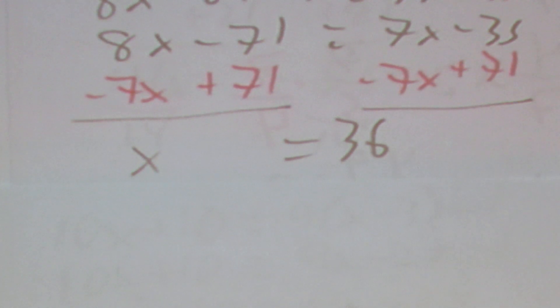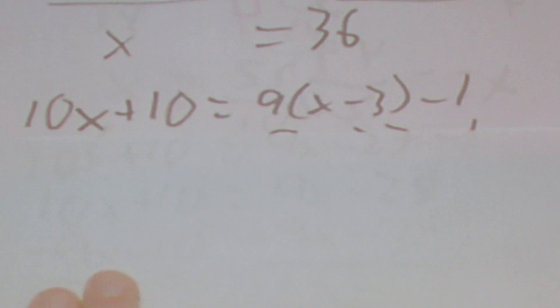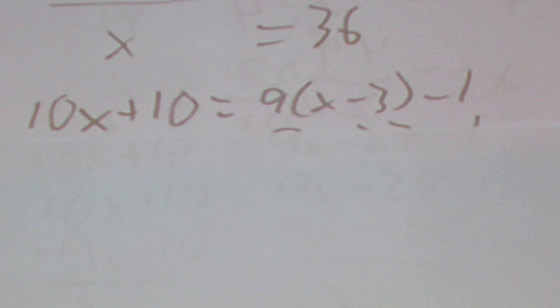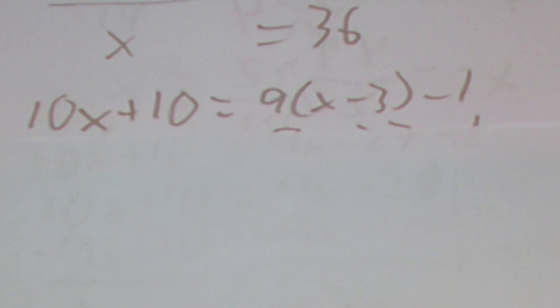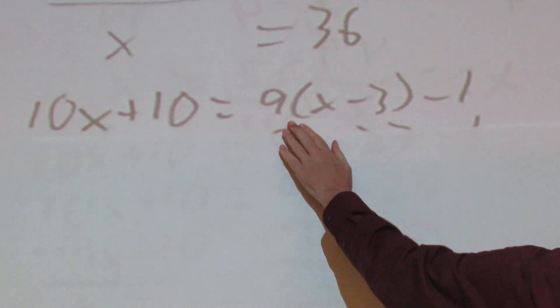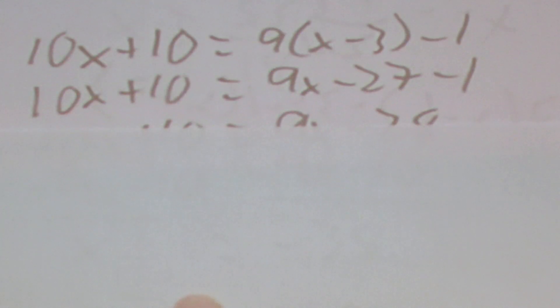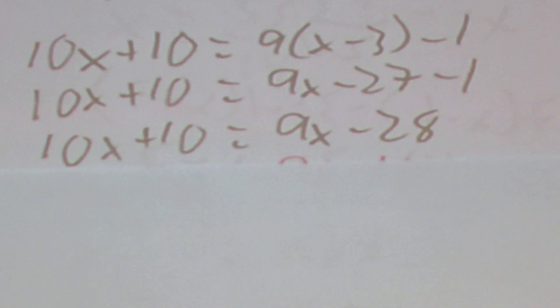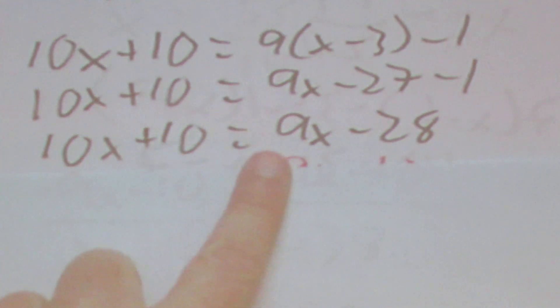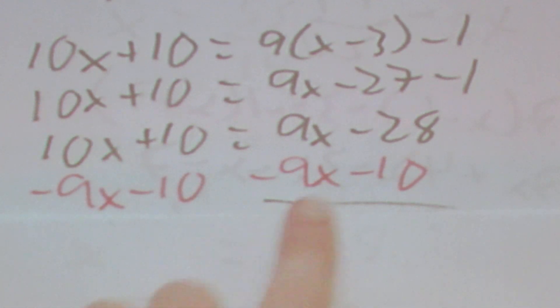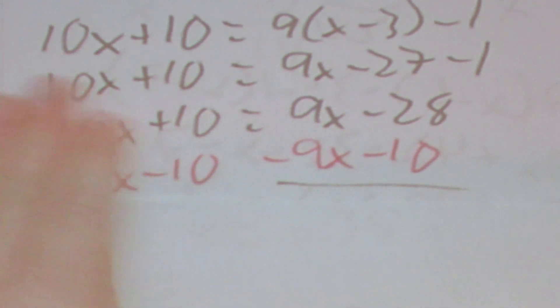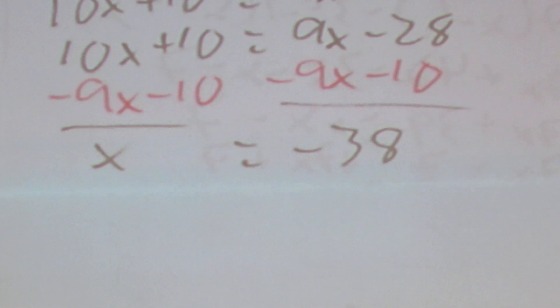The next question is something like 10x + 10 = 9(x − 3) − 1. Distribute the 9 to get 10x + 10 = 9x − 27 − 1. Combine like terms: 10x + 10 = 9x − 28. Subtract 9x and subtract 10 from both sides to get x = −38.